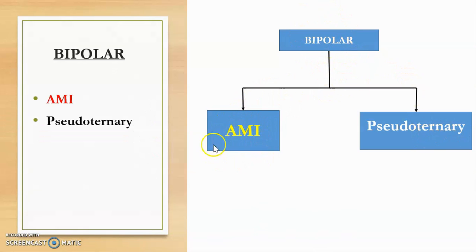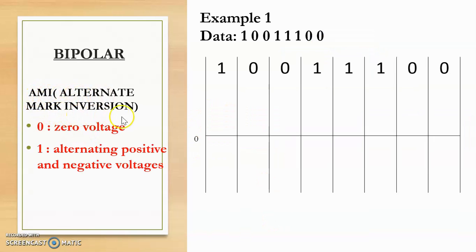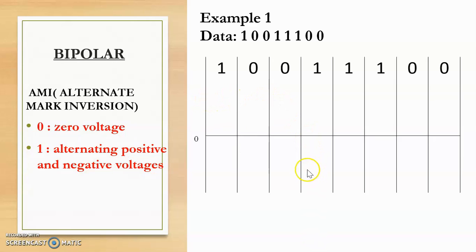Let us discuss AMI first. AMI stands for Alternate Mark Inversion. In this scheme, bit 0 is represented as 0 voltage, that is, on the reference line. Bit 1 is represented as alternating positive and negative voltages — if the previous 1 value was positive, the next 1 value will be negative, and vice versa.